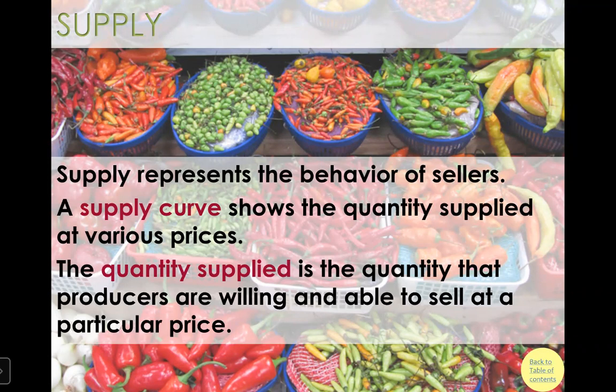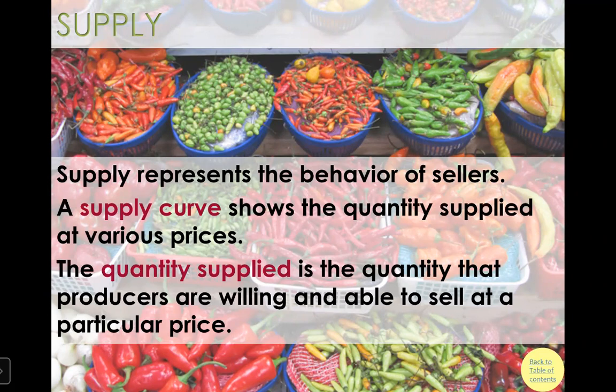In the previous lecture we discussed demand, so now we are going to move to the other side of the market. Remember we are talking about competitive markets, meaning there are many buyers and many sellers. We just looked at buyers' behavior; now we are going to look at sellers' behavior — the supply side. The discussion will be similar because this is just like a mirror image of what happens on the demand side.